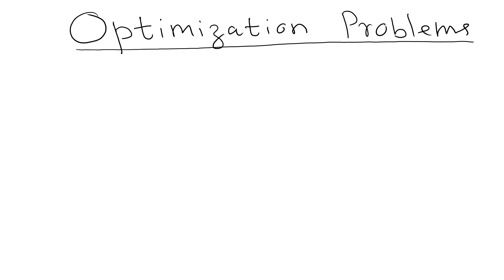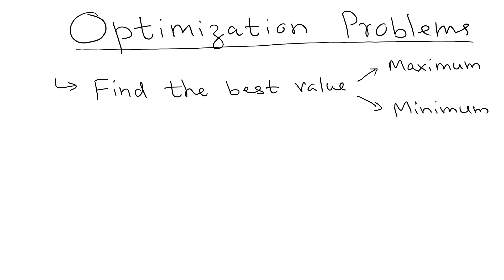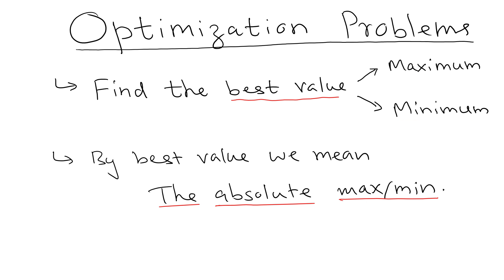In this video we are going to learn how to solve optimization problems. An optimization problem means finding the best value — and when we say best value, it is not always the largest value. It can be the maximum value or the minimum value depending on the situation. For example, if you have a company you want to minimize the cost or maximize the profit, so depending on the problem it can be a minimization problem or a maximization problem.